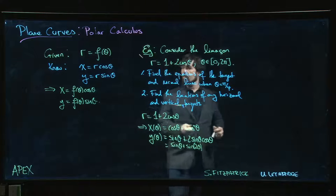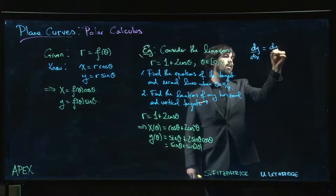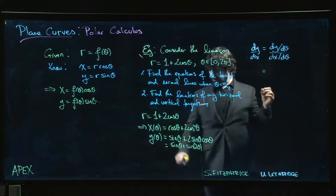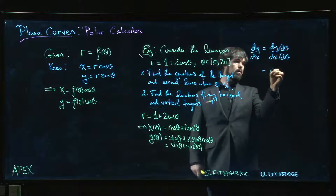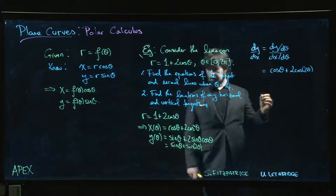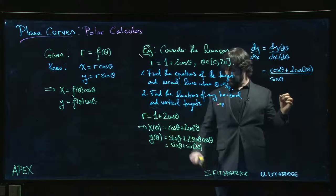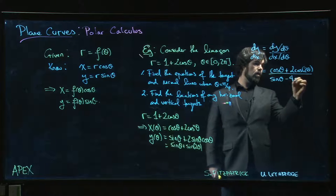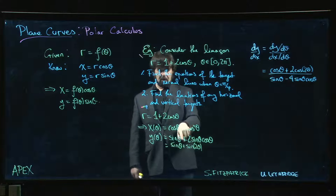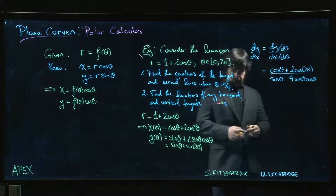So, remember that we want dy dx and that is equal to dy d theta divided by dx d theta. So dy d theta is going to be cos theta plus 2 cos 2 theta. And dx d theta is going to be negative sine theta and here we're going to get minus 4 sine theta cos theta. Derivative of cosine, 2 comes down from the power rule, we get 4 cos theta and we're going to multiply by minus sine because of the chain rule.